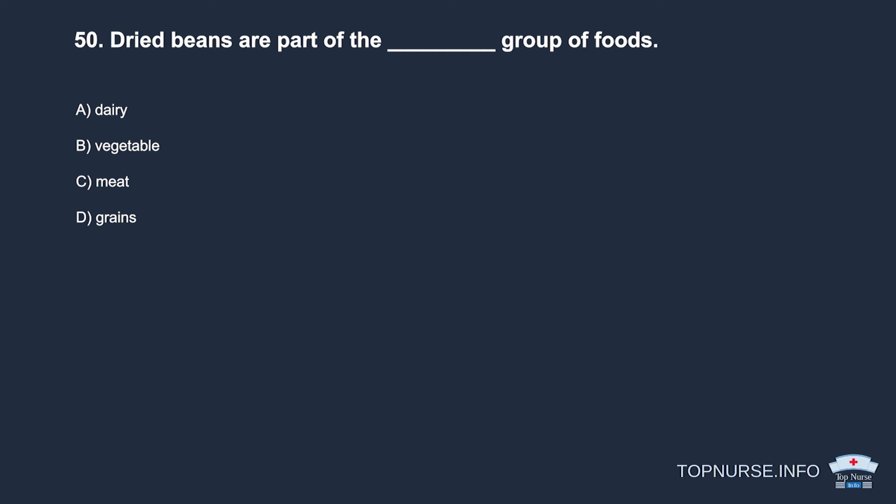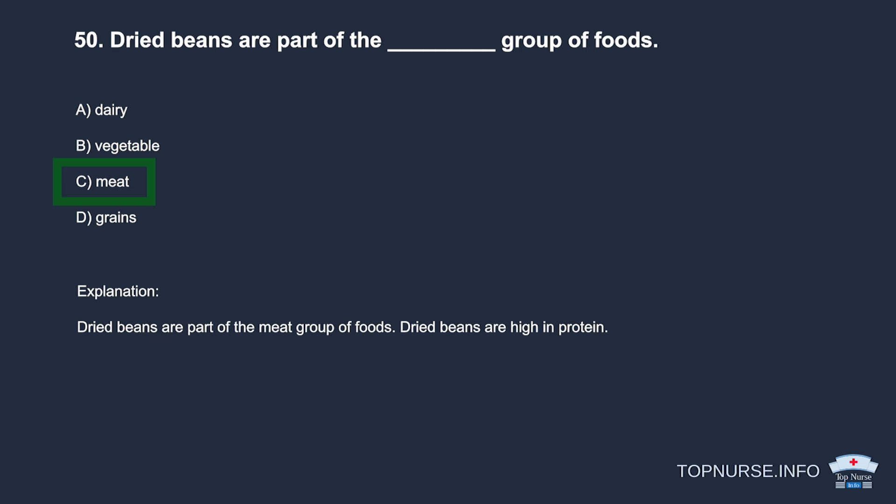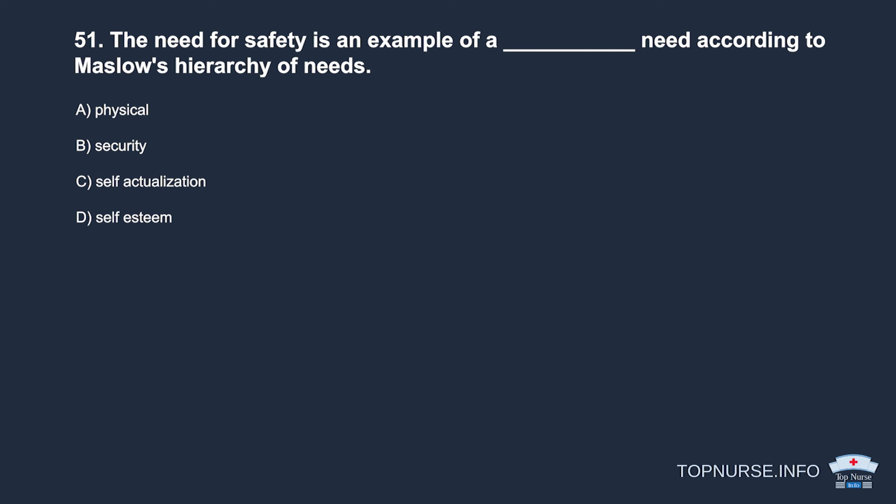Question 50: Dried beans are part of the _____ group of foods. a. Dairy. b. Vegetable. c. Meat. d. Grains. Correct answer: c. Meat. Dried beans are part of the meat group of foods and are high in protein.